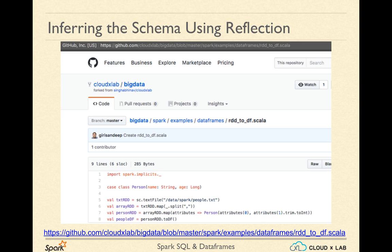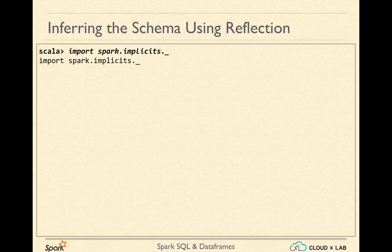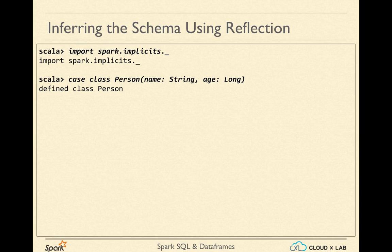Let me walk you through the code. Let us open Spark Shell with Spark version 2 onwards. On Spark Shell, let's first import the Spark Implicits. Let us create a case class Person. It has two variables, name and age. We will basically create objects of this class for each line of the text file.